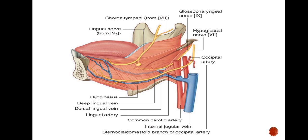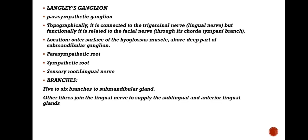As you can see in the figure, the yellow color structure denotes the sub-mandibular ganglion which lies on the outer surface of the hyoglossus muscle. It is also known as Langley's ganglion. It is a parasympathetic ganglion located on the outer surface of hyoglossus muscle, above the deep part of the sub-mandibular gland. The sub-mandibular gland has a deep part and a superficial part, and above the deep part lies the sub-mandibular ganglion.